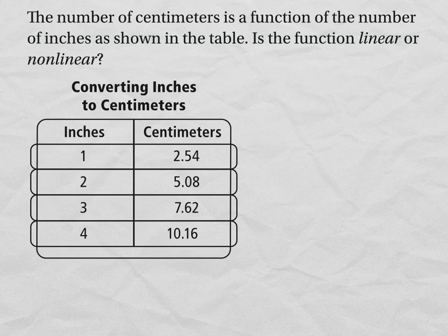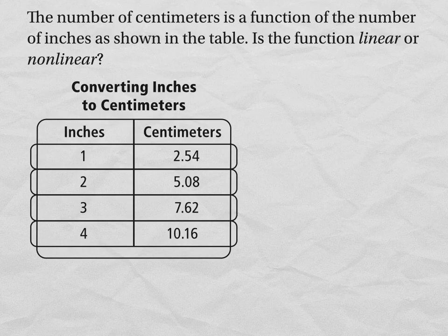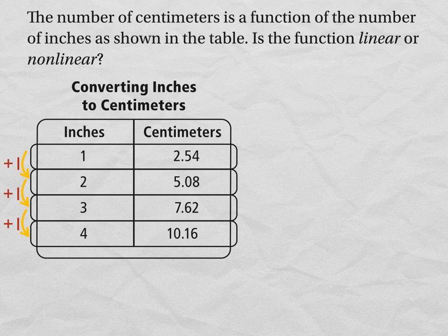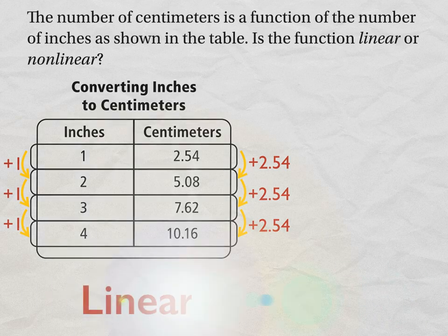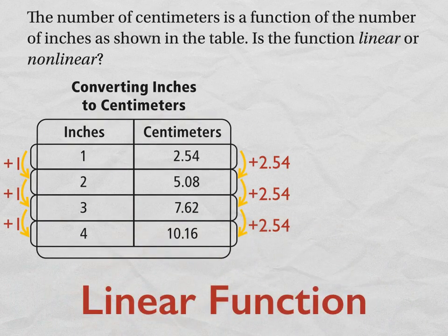The number of centimeters is a function of the number of inches as shown in the table. Is the function linear or nonlinear? If the function is linear, then both the inches and centimeters, or the independent and dependent variables, are going to be increasing at a constant rate. If you look at the inches column, obviously 1 to 2, 2 to 3, 3 to 4, they're all increasing by 1. Then centimeters is a little bit more tricky, just because they are decimals. Remember, you have a calculator. You can use it to figure out how much it's increasing by each time. But it is increasing by 2.54 each time, which means that this is a linear function because inches and centimeters, or both variables, are increasing at a constant rate.